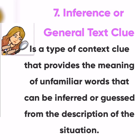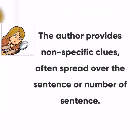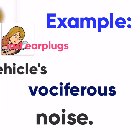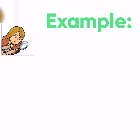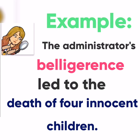The seventh type of context clue is the inference or general text clue. It is a type of context clue that provides the meaning of unfamiliar words that can be inferred or guessed from the description of the situation. The author provides non-specific clues often spread over a sentence or number of sentences. For example, 'I wish I had earplugs to avoid the vehicle's vociferous noise.' Vociferous is the difficult term, while 'I wish I had earplugs' provides the general context clues. Another example: 'The administrator's belligerence led to the death of four innocent children.' Belligerence is the difficult term, while 'death of four innocent children' are the general text clues.